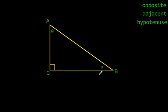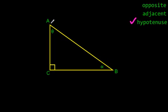Before we get into that, I have to get you comfortable with the idea of these three words: opposite, adjacent, and hypotenuse. Those words I want you to get used to. If you have done Pythagorean theorem, you already know that the hypotenuse is always the longest side — no matter what, this is always the hypotenuse.